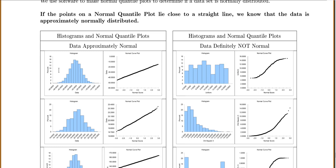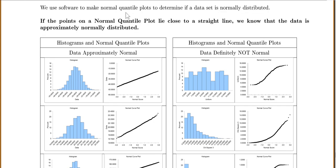But instead of just looking at the histogram, we invented something called a normal quantile plot. We use software to make a normal quantile plot to tell us if our data set is normally distributed. And the normal quantile plot, what it is, is it's comparing your data to an actual normal distribution. And so if your data is normally distributed and you compare it to a normal distribution, they should line up nicely and form a line.